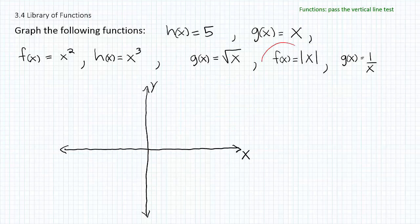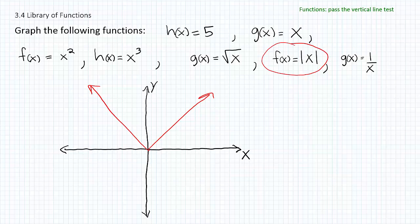Our next function is f of x is equal to the absolute value of x. This forms a V shape — kind of like a parabola, except it comes to a sharp point rather than having that rounded, smooth U look. It's almost like two lines emanating from the same original point. Any function that has the absolute value as its predominant feature will look something like this V shape. It can open upward or downward, be shifted right or left, stretched or compressed.